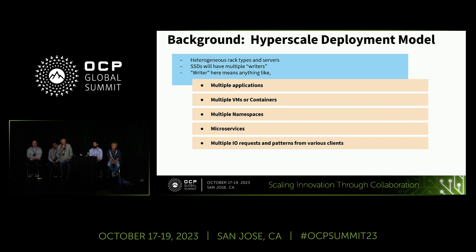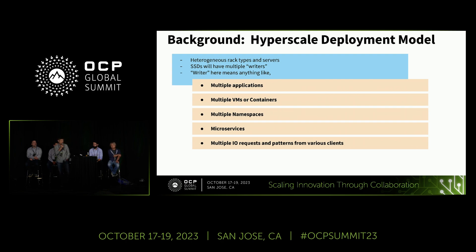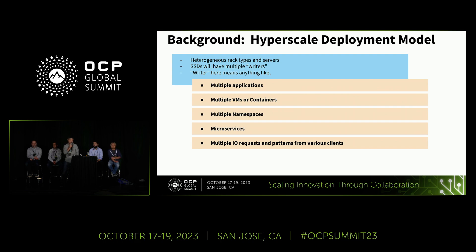Because of our scale, we need to deploy multiple generations of Flash technologies in our data centers, coming from different vendors. Our deployment is always heterogeneous. Because of this heterogeneity, it's very hard to have a uniform data placement strategy across SSDs. The ideal case would be that host-side software can collaborate with the SSD to find optimized placement policies — and this is where FDP comes in.